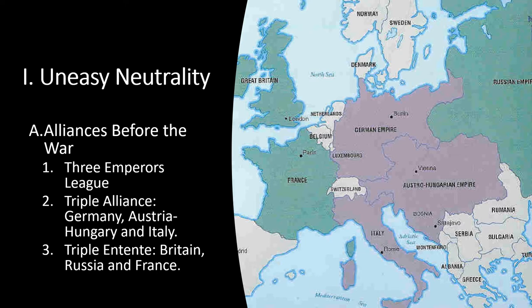Similar to the Triple Alliance, the Triple Entente was a defensive treaty. For example, if Austria-Hungary attacked Russia, Great Britain and France would declare war on Austria-Hungary. What seemed to be a perfect alliance system to avoid war was, in fact, a recipe for total war on the European continent.